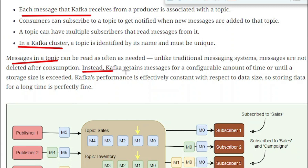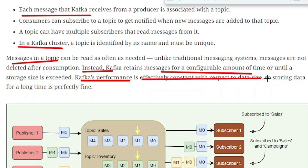Kafka retains messages for a configurable amount of time or until the storage size is exceeded. There are two ways messages are kept even after consumption: either for a configured time period, or until the storage where messages are stored has no free space left, in which case messages are deleted. Kafka's performance is effectively constant with respect to data size, so storing data for a long time is perfectly fine — this is one of the major advantages of Kafka.